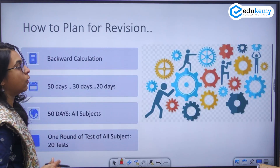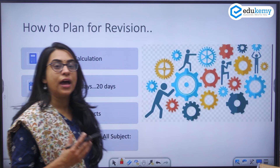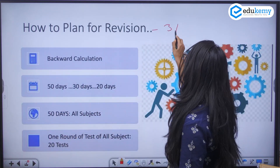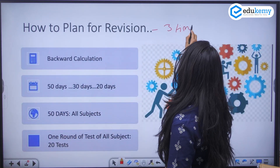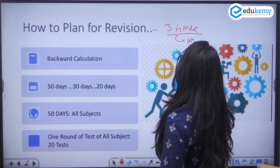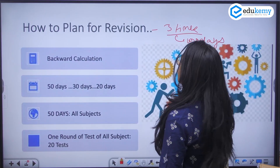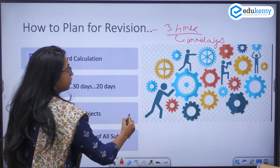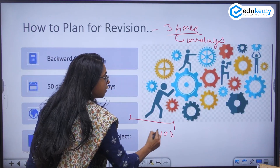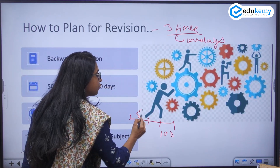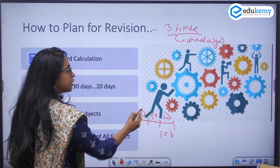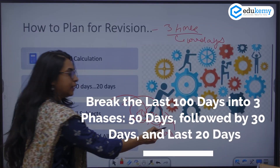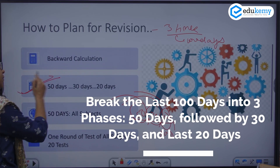Now we have to plan for revision — three times we have to go through the same things in the last 100 days. What you have to do is calculate backwards. If 100 days are left, plan for 50, then 30, and then 20. First plan for 50 days, then plan for 30 days, and then plan for the final 20 days.